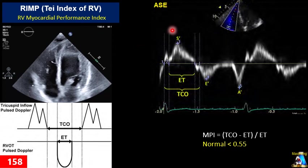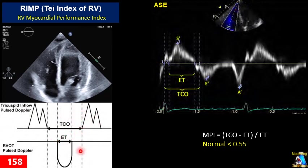Another technique for RIMP uses pulsed wave Doppler. We obtain a four-chamber view, perform pulsed Doppler of the tricuspid valve, and measure TCO from the end of the A wave to the beginning of the next E wave. Then we go to the parasternal short-axis view at the pulmonary valve, perform pulsed Doppler, and measure ejection time from beginning to end. The problem with this technique is beat-to-beat variance — it is only accurate if the R-R interval is equal in both acquisitions, which rarely happens. Therefore, tissue Doppler is the preferred technique for measuring RIMP.